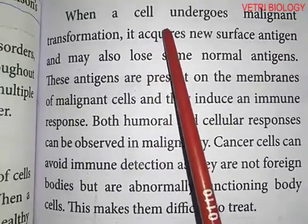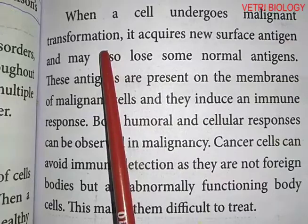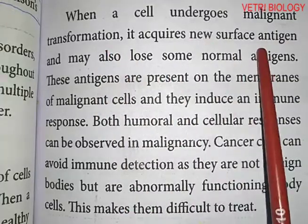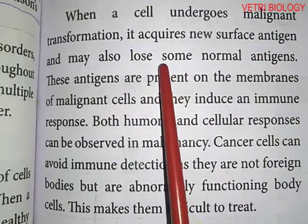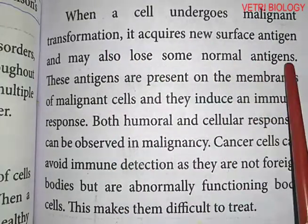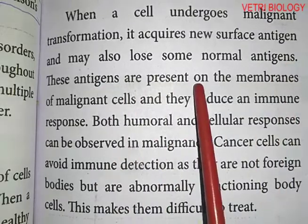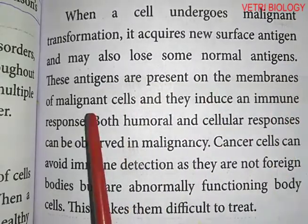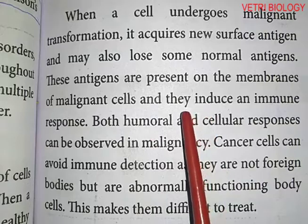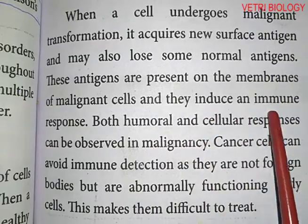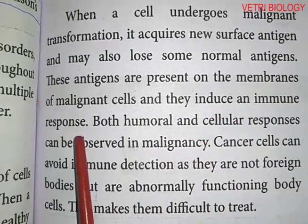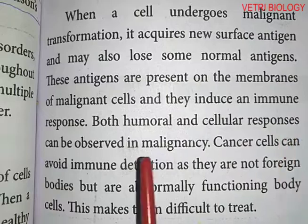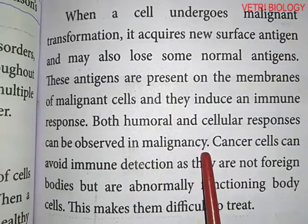When a cell undergoes malignant transformation, it acquires new surface antigens and may also lose some normal antigens. These antigens are present on the membranes of malignant cells and they induce an immune response. Both humoral and cellular responses can be observed in malignancy.